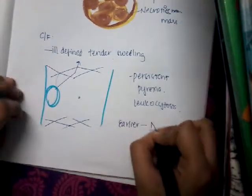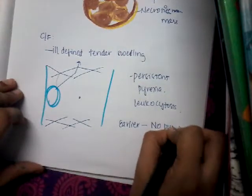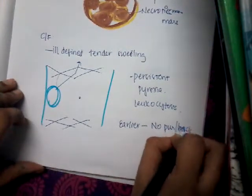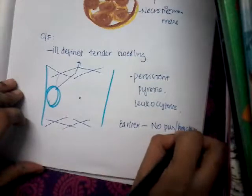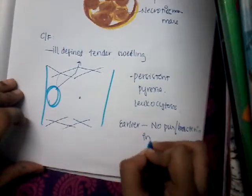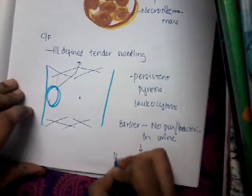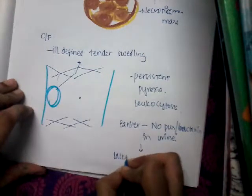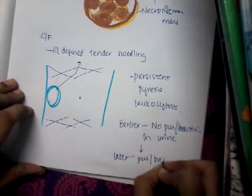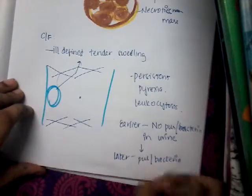Earlier there is no pus or bacteria in the urine, but later these appear — you can see pus or bacteria in the urine as the condition progresses.